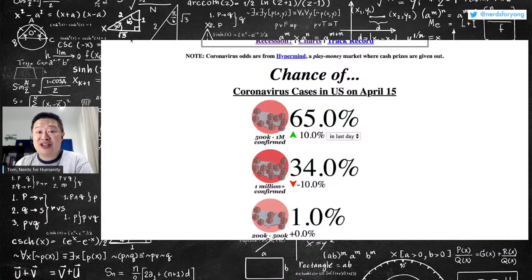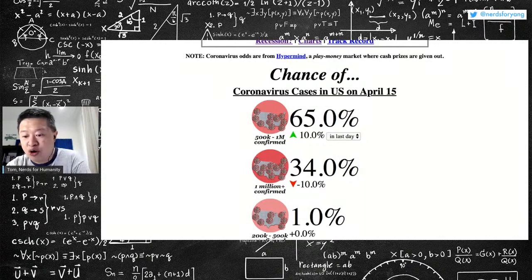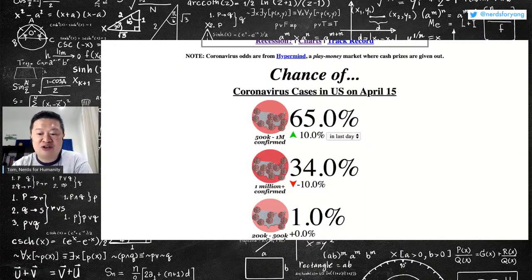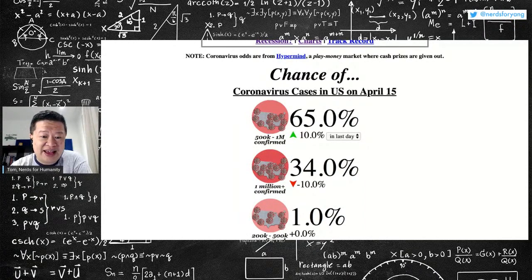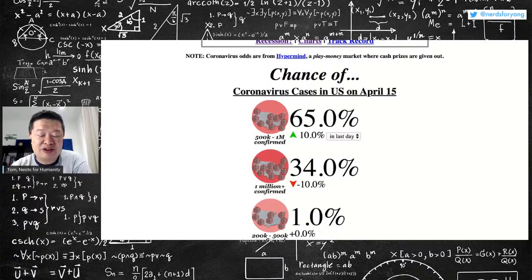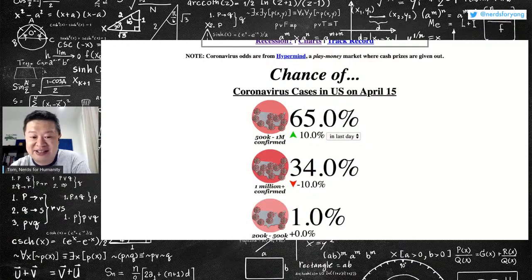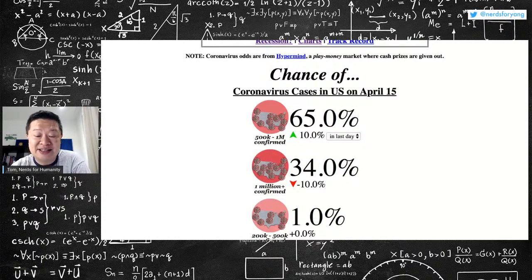Gamblers think there's a 65% chance that we will go from 270,000 to over 500,000. And then some think there's a one in three chance that we will actually hit over a million cases in the U.S. That's nuts.